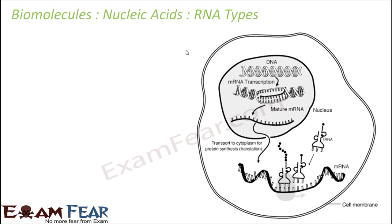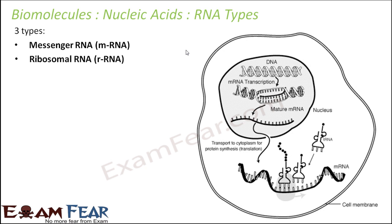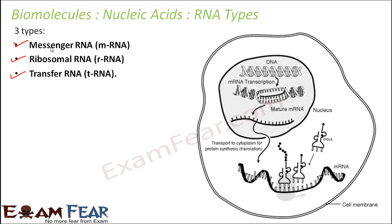Nucleic acid was all about discussing DNA and RNA. At many places you would have seen that we talk about mRNA, tRNA, rRNA. So let us quickly see what each of them is. There are three types: messenger RNA, often called mRNA; ribosomal RNA, often called rRNA; and transfer RNA, often termed tRNA. These are the three types of RNA and each of them performs a specific role in a cell.